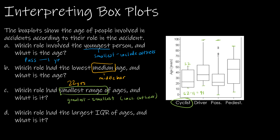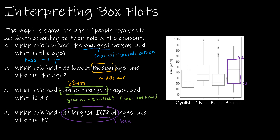Finally, we're looking for the largest IQR. The IQR talks only about the box, so we're looking for the biggest box. Looking at just the boxes, the smallest seems to be cyclist. The largest box — and therefore the largest IQR — is pedestrian. So the largest 50% spread of data is pedestrian. That would be about 62 years to about 20 years. When expressing IQR as a value, we say 62 minus 20, which is 42 years. So: pedestrian, 42 years.